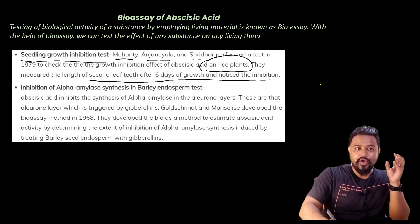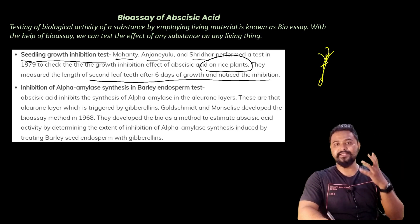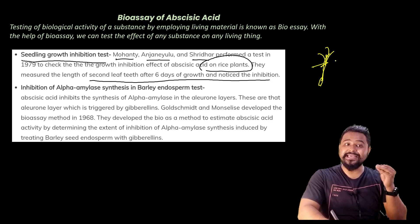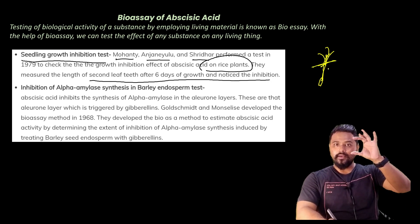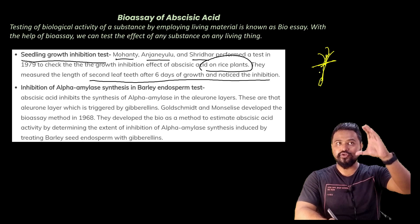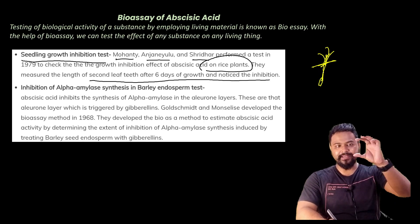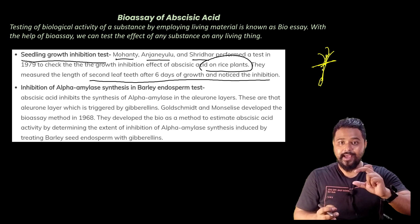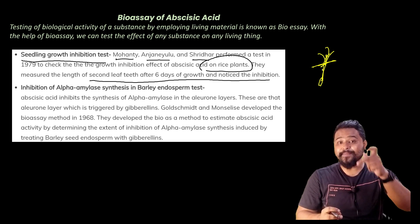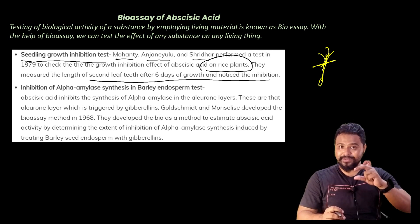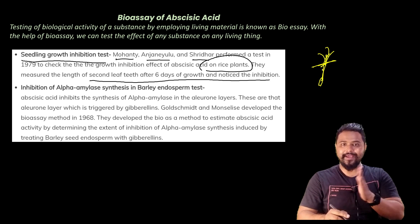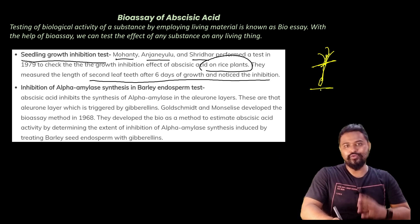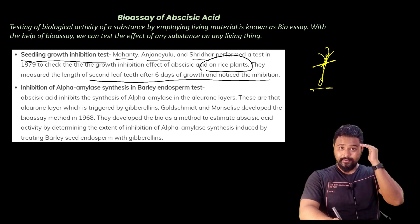They measured the length of the second leaf sheath after 6 days of growth and noted the inhibition. We apply abscisic acid and observe the salt leaf length, then plot a graph of seedling growth to study the inhibition effect.